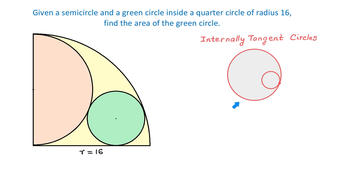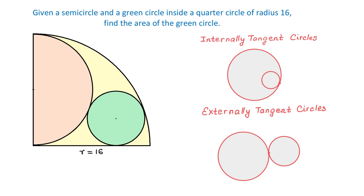Here to the right, I have an example of internally tangent circles — as you see, one circle is inside the other one, and they have a point of tangency. The green circle and the semicircle are externally tangent circles, and this is the point of tangency. Here to the right, I also have an example of externally tangent circles, and this is the point of tangency.